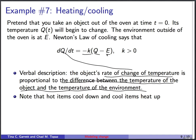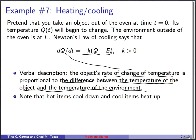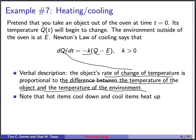This makes sense: if k is positive and the object is hot — q is large compared to e — then q minus e is positive, times k is positive, but the negative sign makes the whole thing negative. So dq/dt is negative, meaning your hot object cools down. This same equation can also be called Newton's law of heating: if q starts out colder than the environment, q minus e is negative, and the double negative makes dq/dt positive, so your cold object heats up.